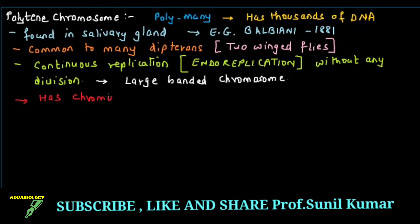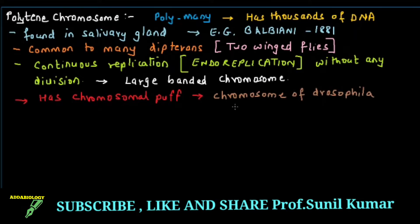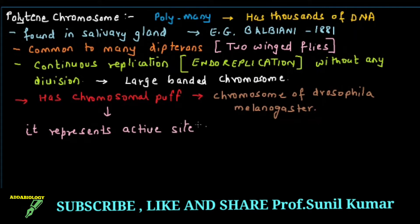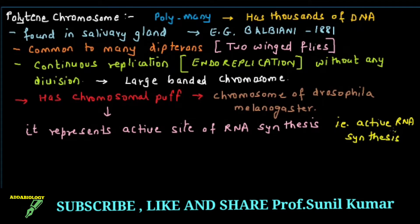It has a chromosomal puff, and it is mostly studied in the chromosome of Drosophila melanogaster. This chromosomal puff logically represents the active site of RNA synthesis. There is active RNA synthesis going on in the chromosomal puff. When this transcription goes on continuously near the centromere area, it forms a ring-like structure. Since it was described by Balbiani, we call it the Balbiani ring.